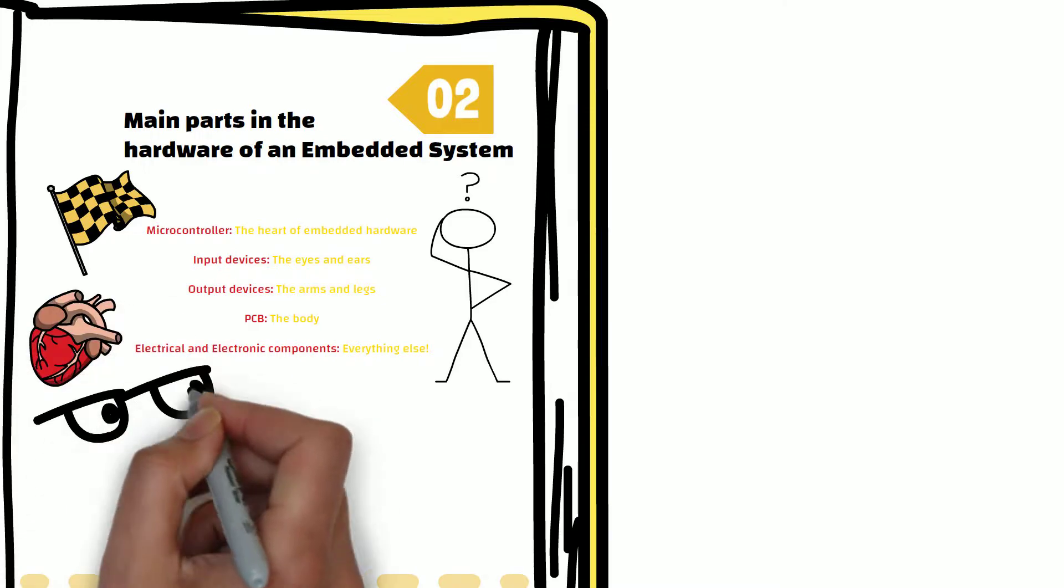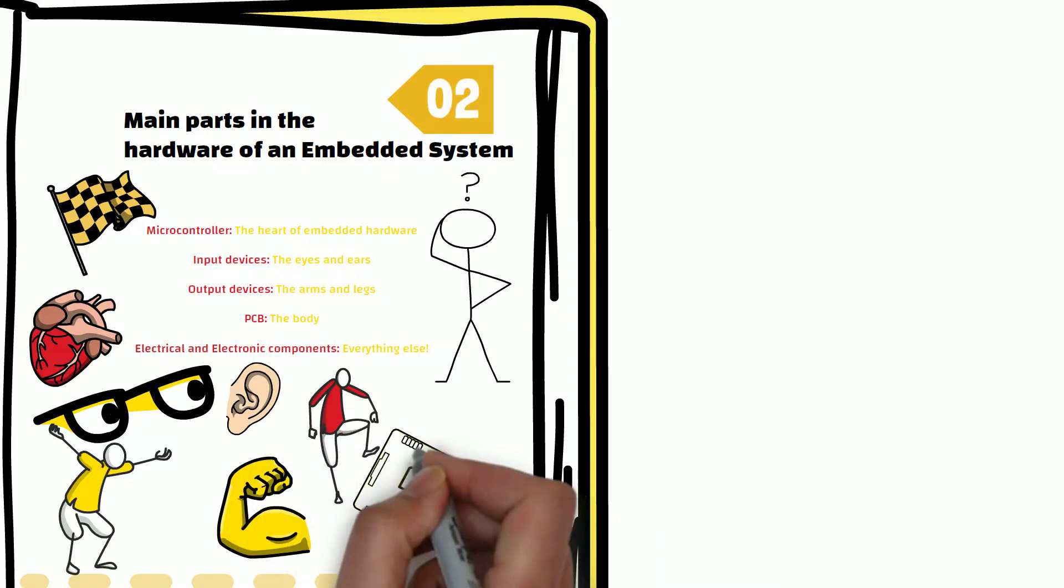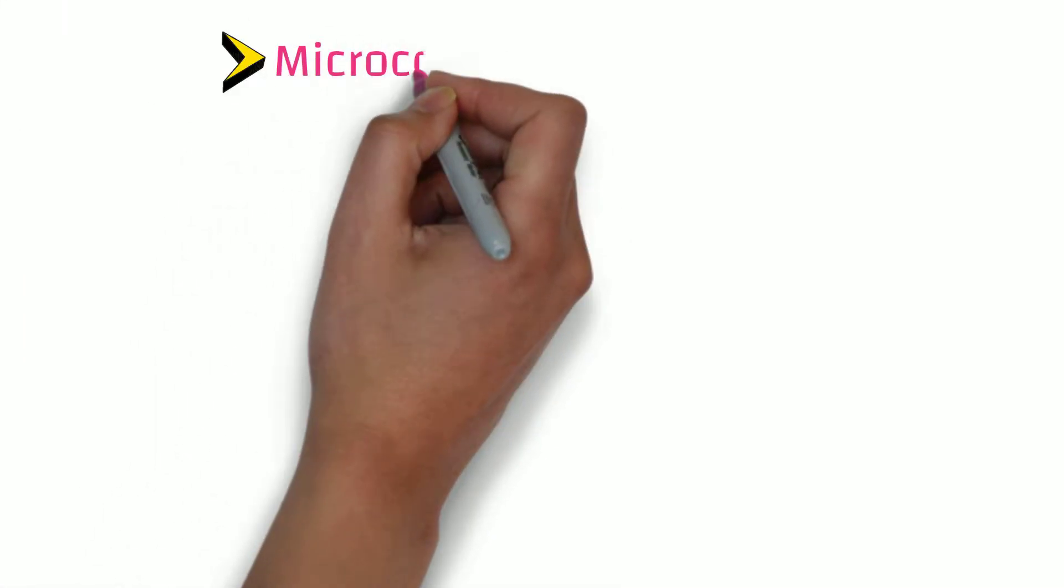We will see each of these parts with some analogies so that you can understand everything better. Let us start with the first part, the microcontroller.